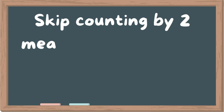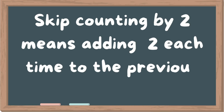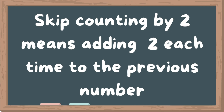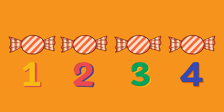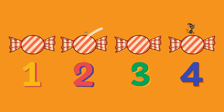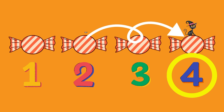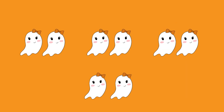Skip counting by two means adding two each time to the previous number. In this example, you'll start with two. You add two more and skip to four. You get it? Let's keep practicing.